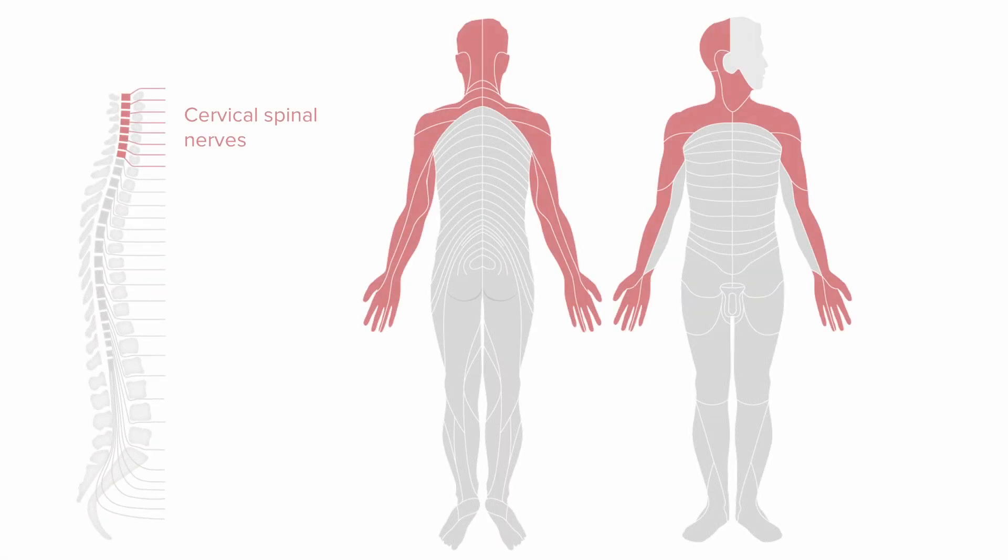And so here we can see in a map form of sorts, the dermatomes provided by the cervical spinal nerves. So we know that if there's any loss of sensation in this area in red, it can be traced to some sort of nerve supplying one of the areas of the cervical spinal cord.